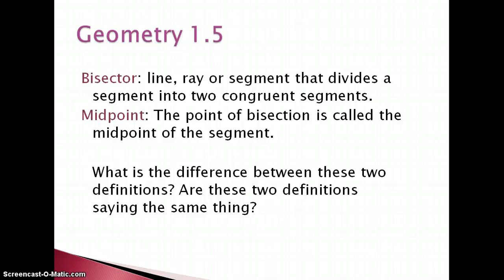Hello everyone and welcome to geometry section 1.5, the division of segments and angles. First up we've got a little bit of vocabulary. We have the word bisector, and the word 'bi' means two. This is a line, ray, or segment that divides a segment into two congruent segments.